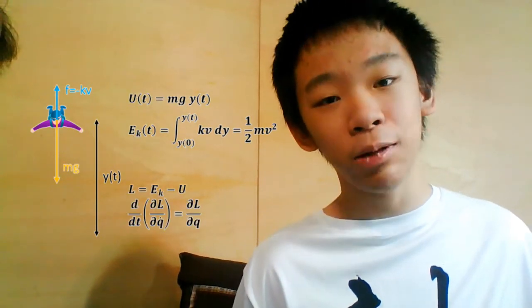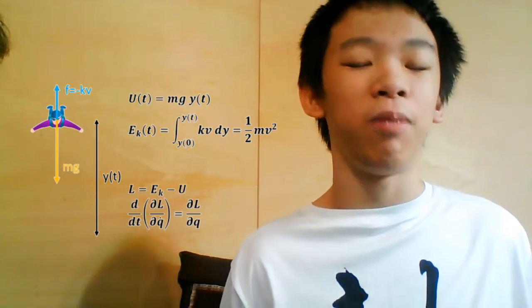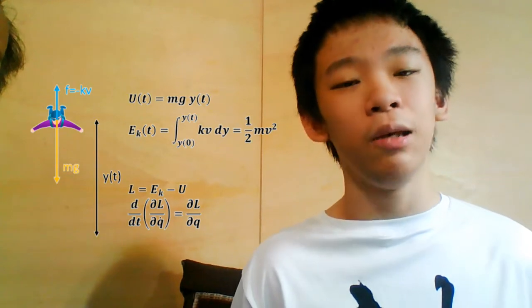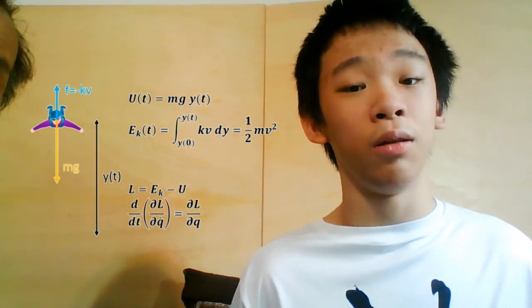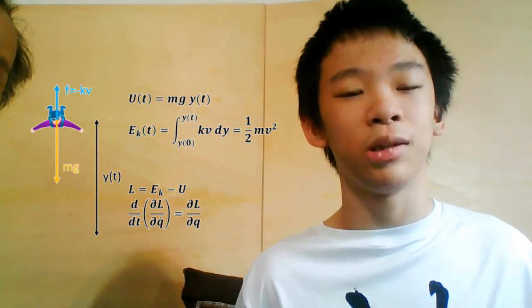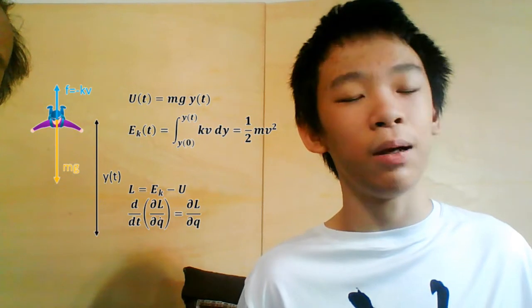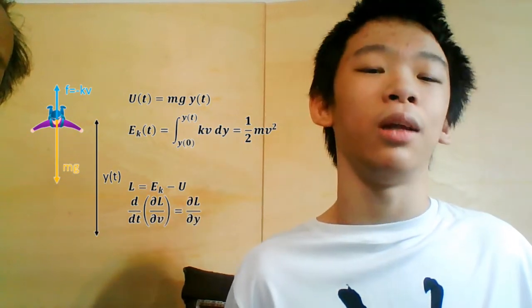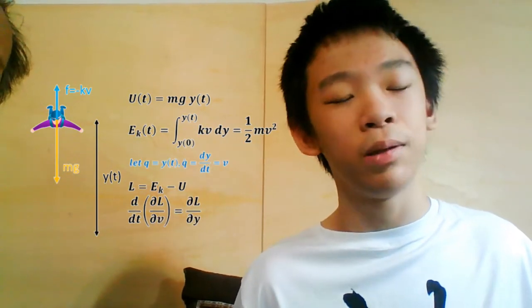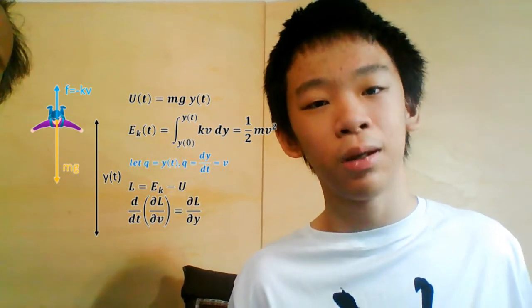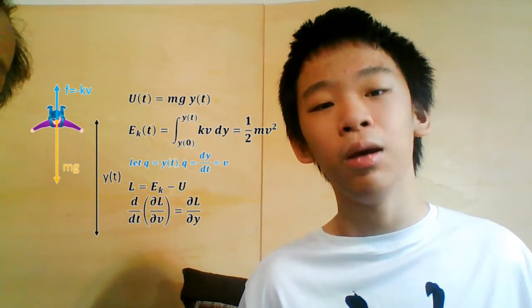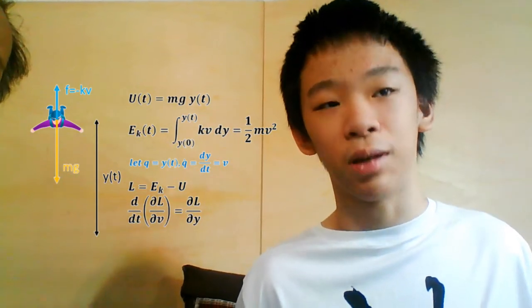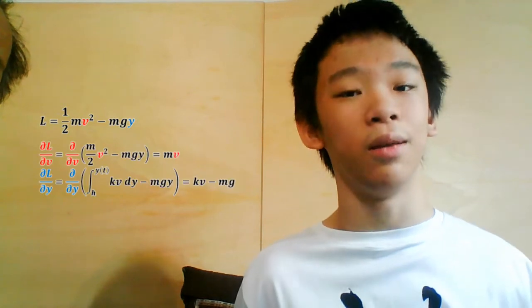the Euler-Lagrange equation states that the time derivative of the partial of L over partial q-dot equals the partial of L over partial q, where L is the Lagrangian — the kinetic energy minus the potential energy. We let q be the current position from the ground, so q-dot equals dq/dt equals v, the current velocity. The partial derivatives can be expressed accordingly.